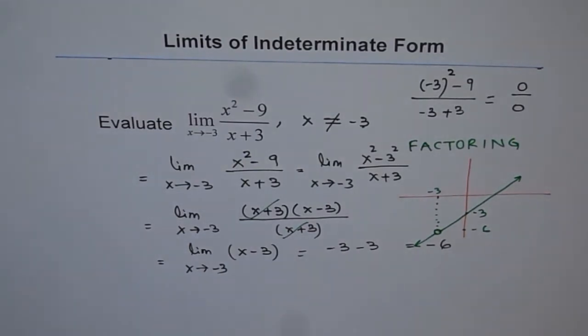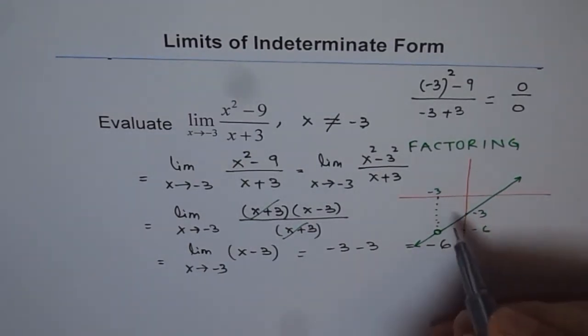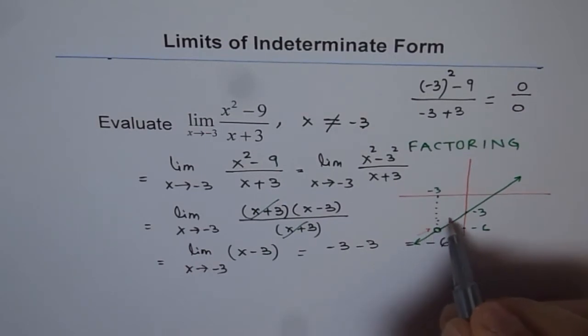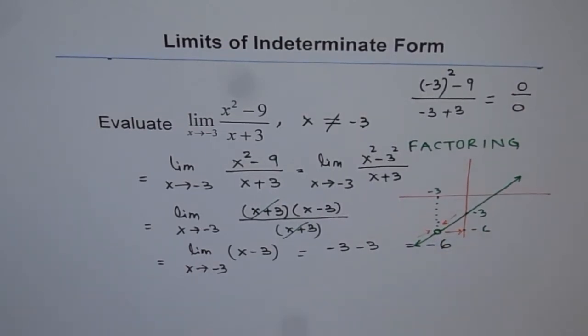As you can see, if we approach minus 3 from the left or from the right, we approach a value minus 6. That is the limiting value. So that is the answer. And minus 3 as such is not in the domain of the function. I hope that makes things very clear.